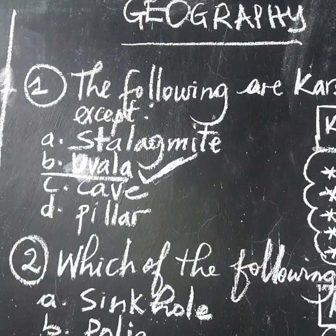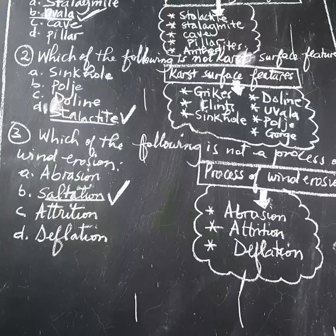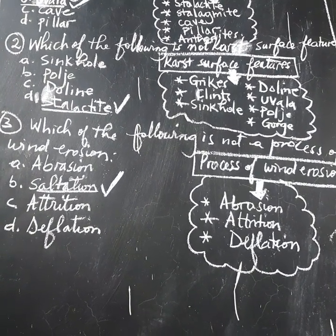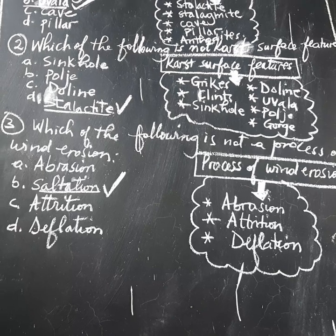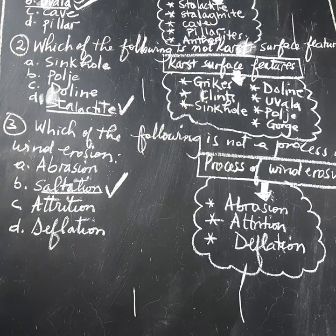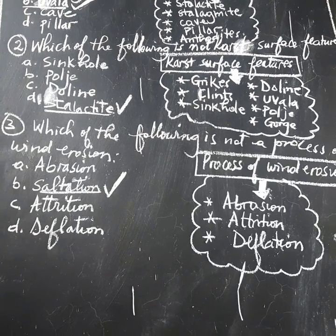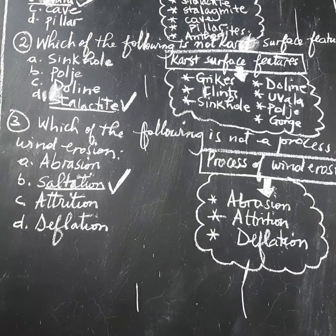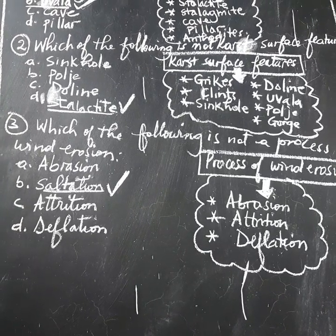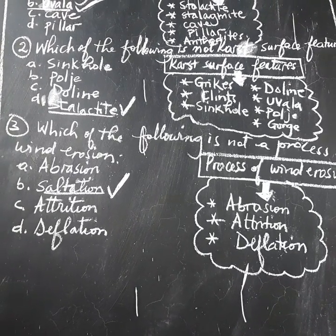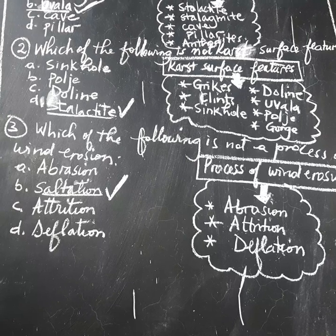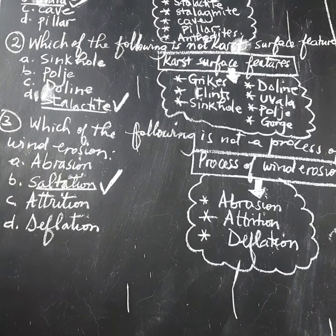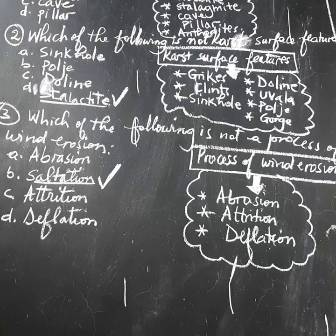Let's go to question number two. Which of the following is not a karst surface feature? A: Sinkhole. B: Polje. C: Dorine. D: Stalagmite. Therefore, the correct answer is D, because stalactite is an underground feature, not a karst surface feature.